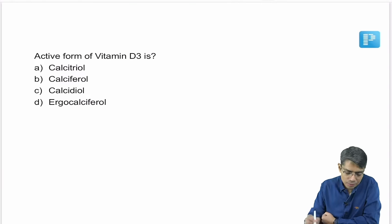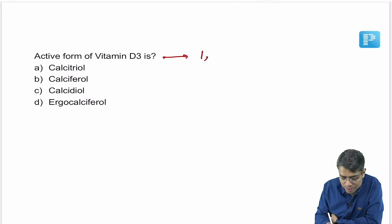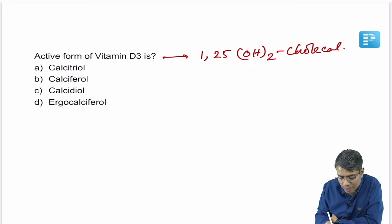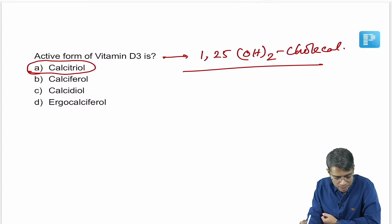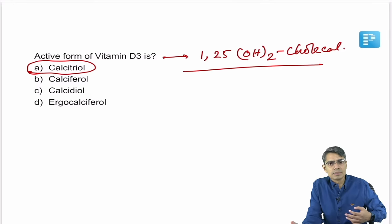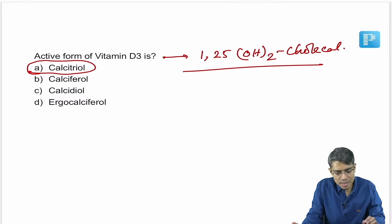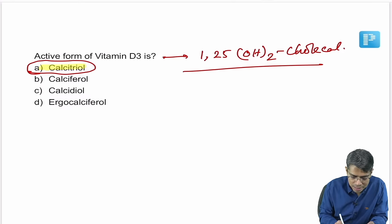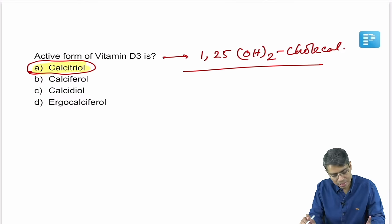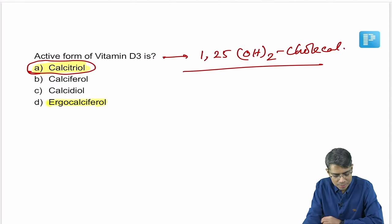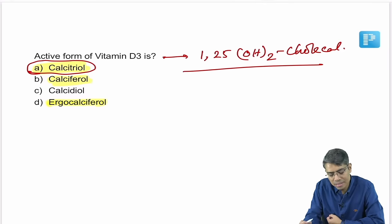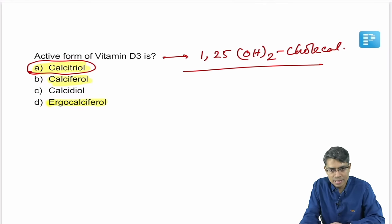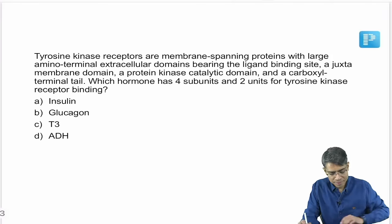Active form of Vitamin D3: we already discussed that 1,25-dihydroxycholecalciferol is the most active form, also known as calcitriol. Cholecalciferol is the general term for Vitamin D. Ergocalciferol is the plant source of Vitamin D. The active form is calcitriol — 1,25-dihydroxycholecalciferol.